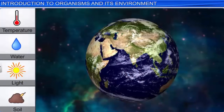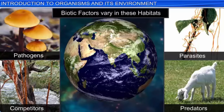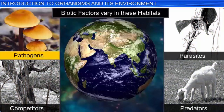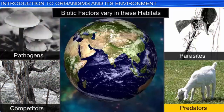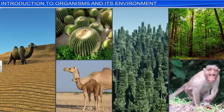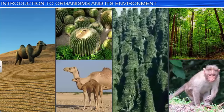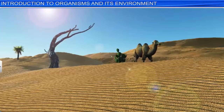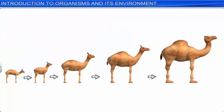The difference in chemical and physical conditions of these habitats is due to the variation in abiotic factors such as temperature, water, light, and soil. Apart from interacting with abiotic factors, organisms also interact with other living organisms in their habitats, such as pathogens, competitors, parasites, and predators. This is the reason why organisms differ from habitat to habitat. For example, the plants and animals in the Rajasthan Desert are different from those in the Meghalayan rainforest. It is assumed that organisms have evolved or modified themselves over time through natural selection to survive and reproduce in their respective habitats.